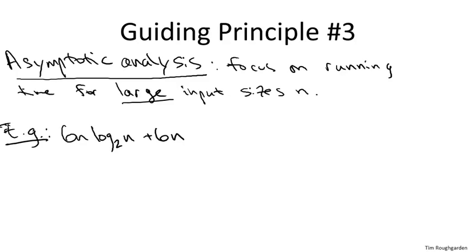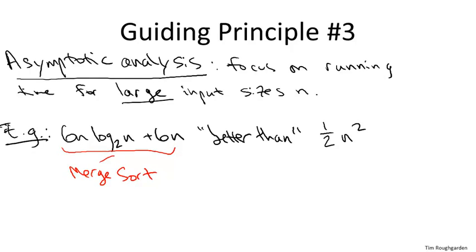So mathematically, we were saying the running time of merge sort, which we can represent as the function 6n log base 2 of n plus 6n, is better than any function which has a quadratic dependence on n. Even one with a small constant, like let's say 1 half n squared, which might be roughly the running time of insertion sort. And this is a mathematical statement that is true if and only if n is sufficiently large.